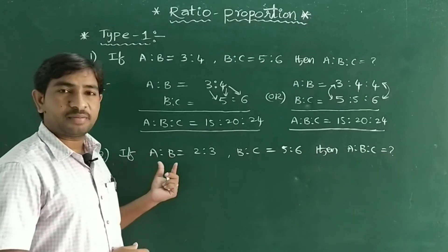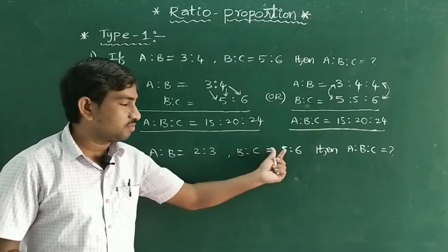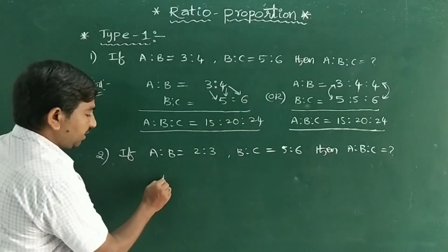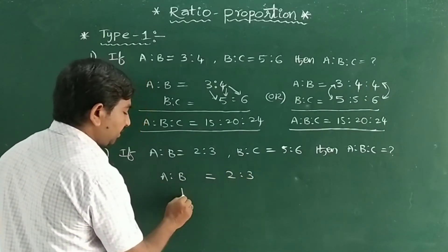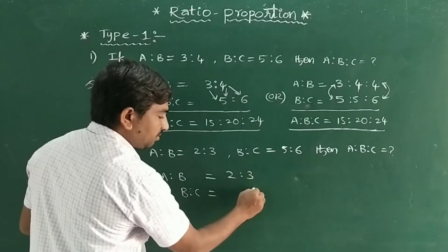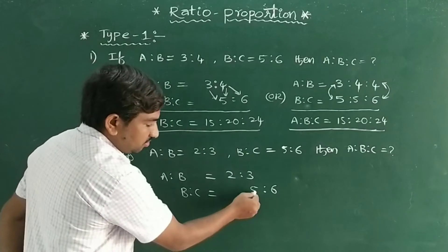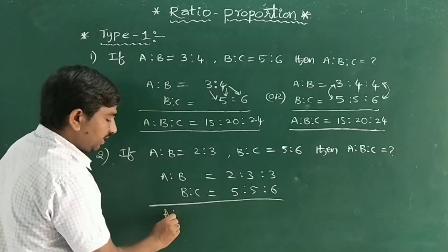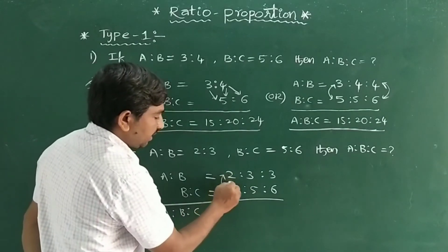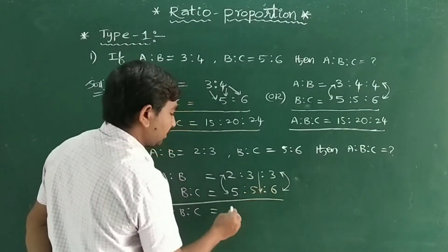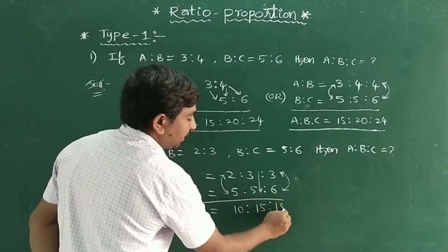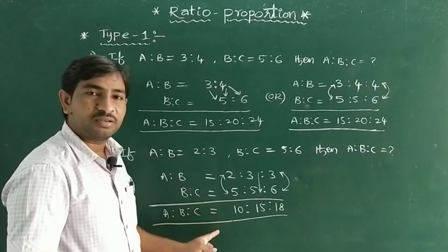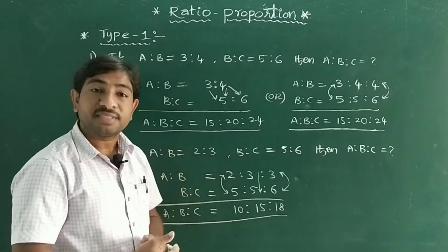If A:B = 2:3 and B:C = 5:6, find A:B:C. Using the easy method: write A:B = 2:3 and B:C = 5:6. Write the left-side number 5 and right-side number 3 in place. Now multiply: 2×5=10, 3×5=15, 3×6=18. If cancellation is possible, do it; otherwise no need. So A:B:C = 10:15:18.